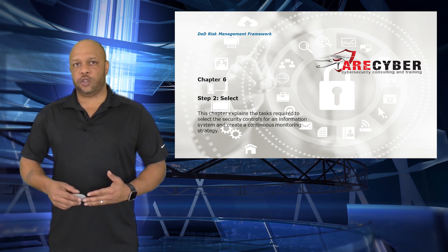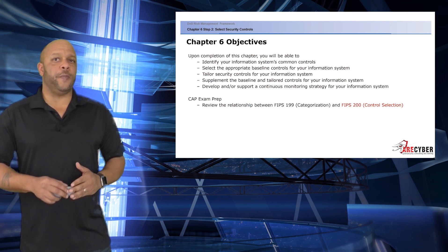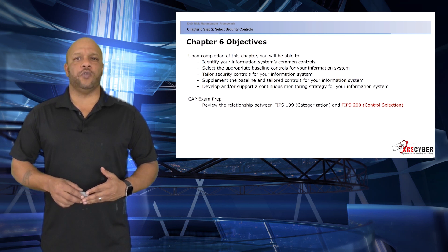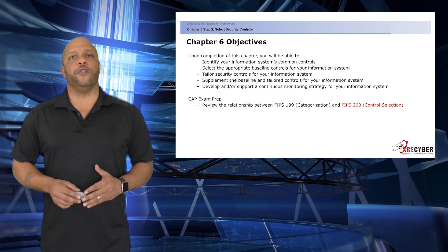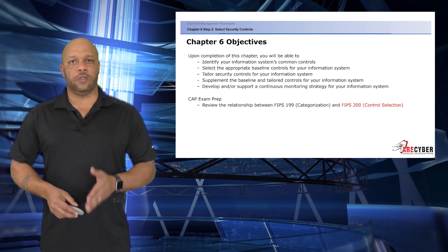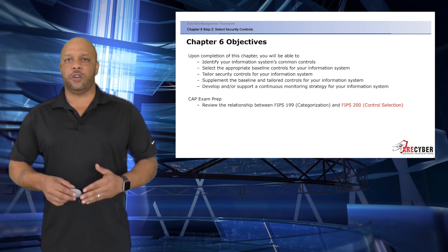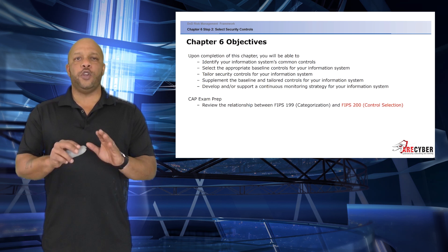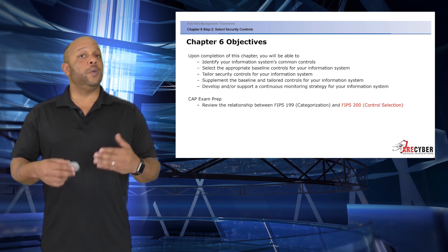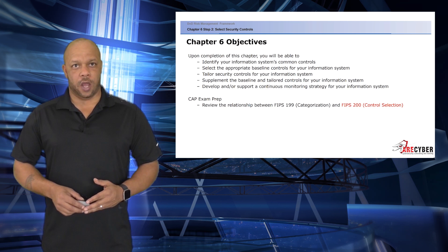Throughout this chapter, we're going to help you identify your information system's common controls, select the appropriate baseline controls for your information system, tailor the security controls for your information system, and supplement the baseline and tailored controls for your information system as a whole. We will also develop and support a continuous monitoring strategy.